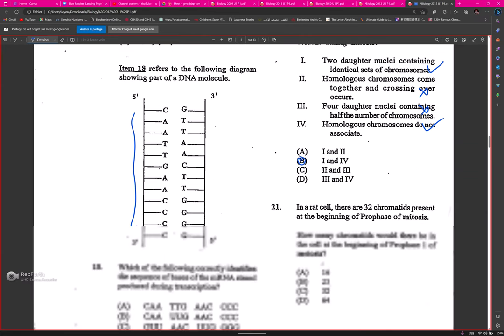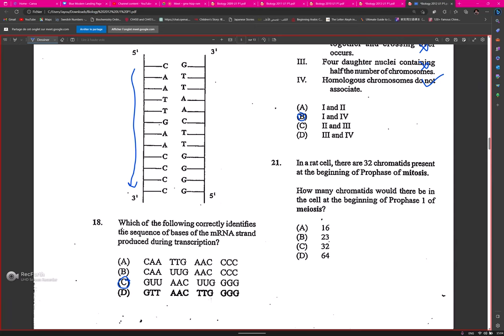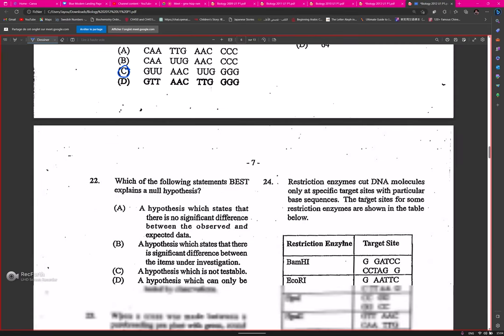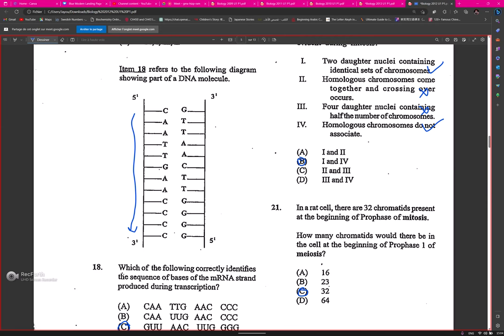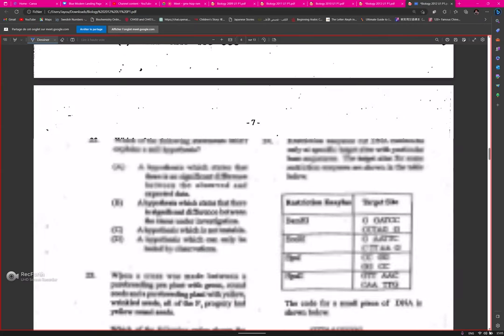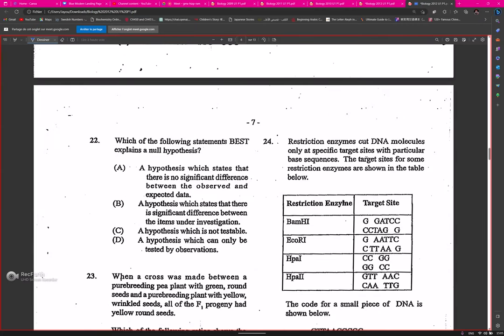Question twenty-one: in a rat cell there are 32 chromatids present at the beginning of prophase in mitosis. How many chromatids would be in the cell during the beginning of prophase one of meiosis? C. Are we sure? Question twenty-two: which of the following statements best explains a null hypothesis? There is no significant difference, beautiful.